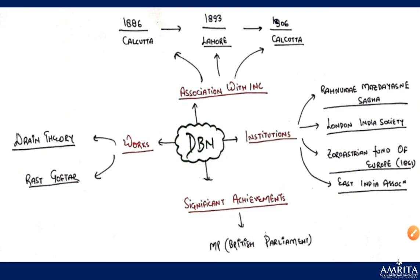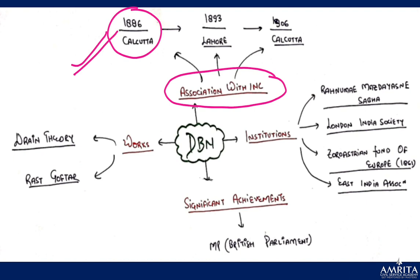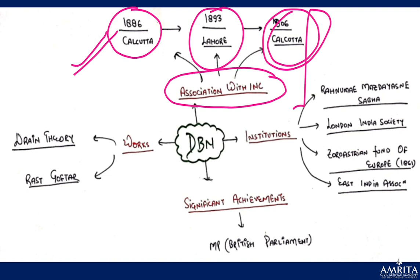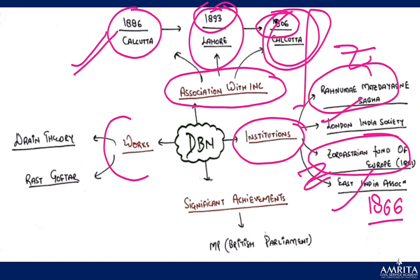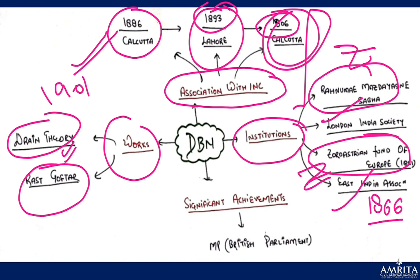To summarize Dadabhai Naoroji: he presided over three INC sessions — 1886 (Calcutta), 1893 (Lahore), and 1906 (Calcutta). Institutions he was associated with include Rahnumai Mazdayasnan Sabha, Zoroastrian Fund of Europe, London India Society, and East India Association — remember the year 1866 for the East India Association. His publication was 'Rast Goftar.' His key work is the drain theory from his 1901 book. He was a British MP from 1892 to 1895.